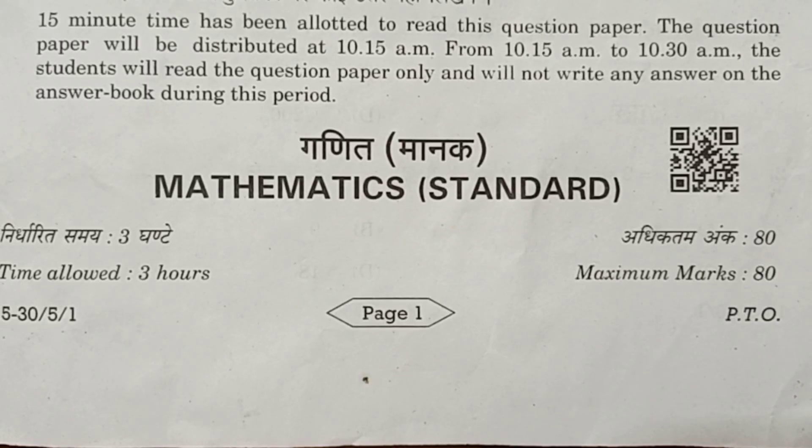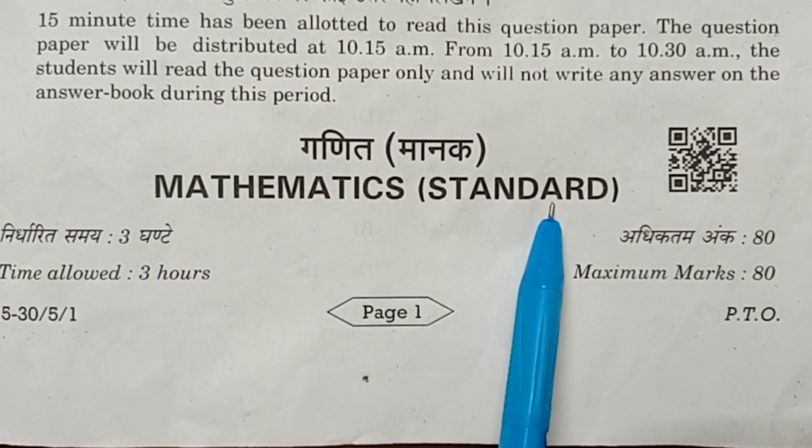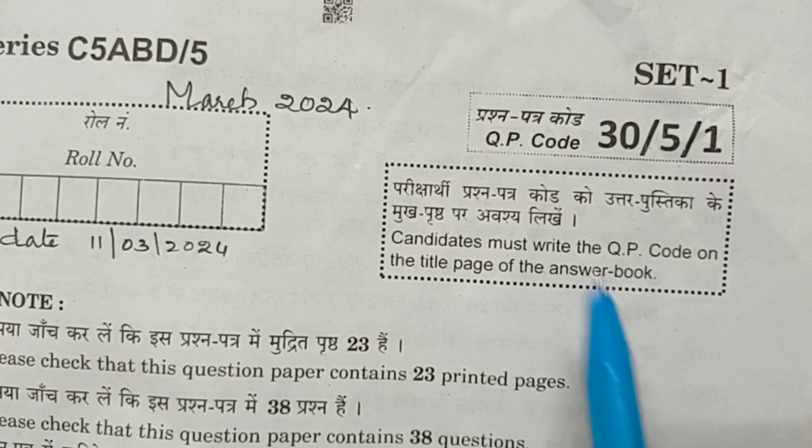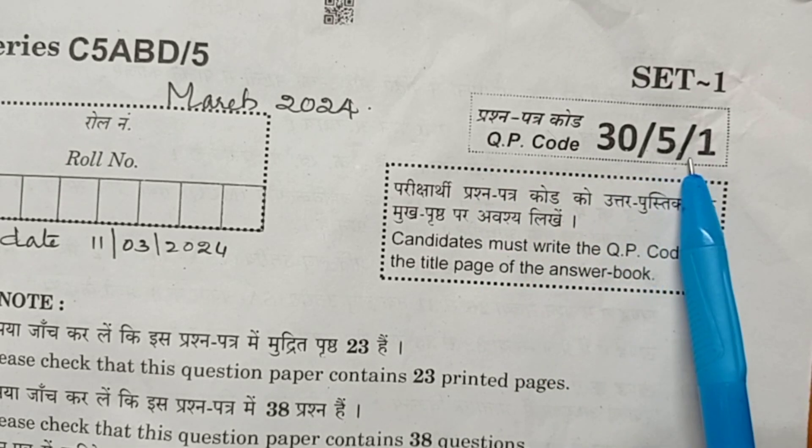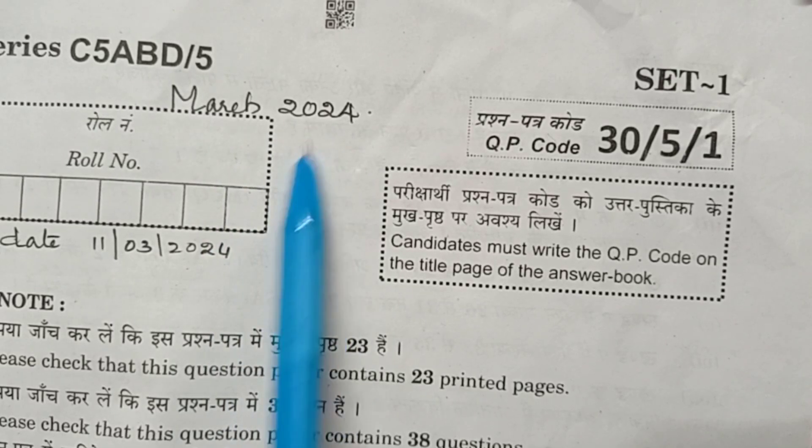Hi viewers, in this video I am discussing section A of CBSE class 10 mathematics question paper. The set is set 1, code is 30/5/1. It is conducted on March 2024.